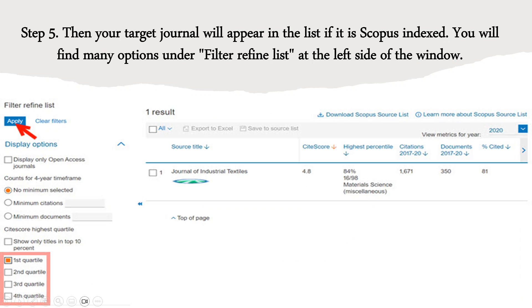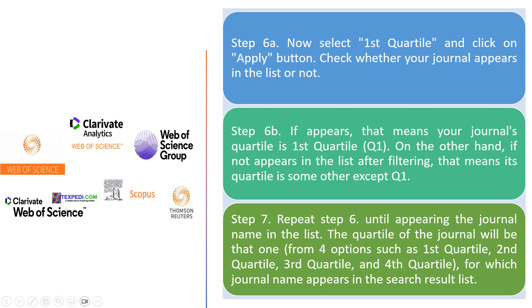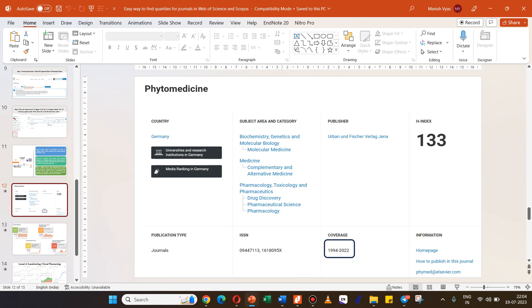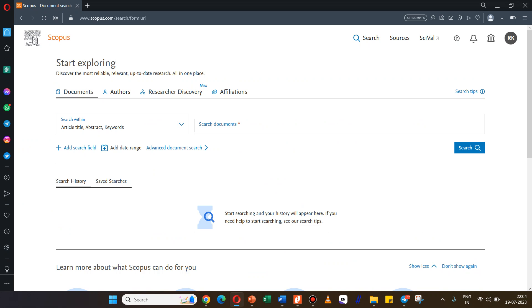To find which quartile a journal belongs to, select 'First Quartile' and press the Apply button. If this journal belongs to Q1, results will appear; otherwise no results will be shown. If no result appears, deselect Q1, select Q2, and press Apply again to check. Repeat this step for Q3 and Q4 until your journal becomes visible in one of the four quartiles.